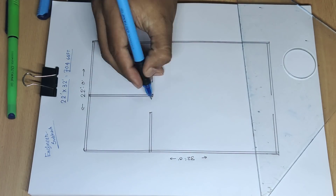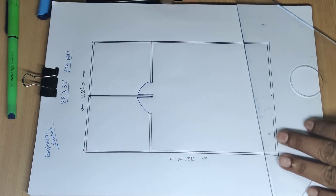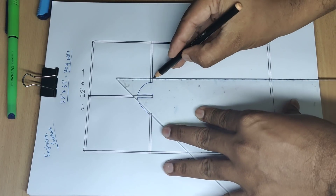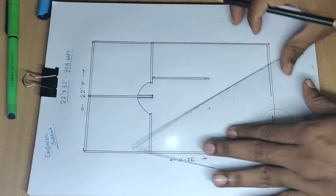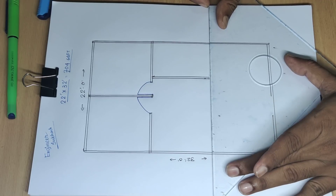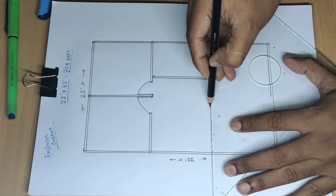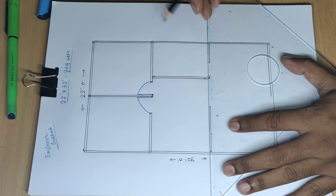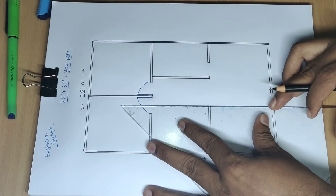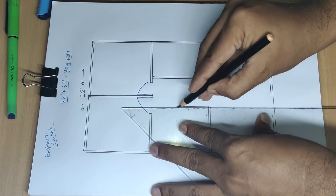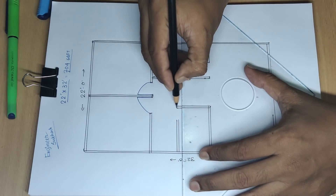This is a store door, 3 feet wide, 900 mm wide door, and this is wall — partition wall. This is 125 mm partition wall and this is wall, this partition wall.